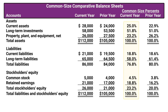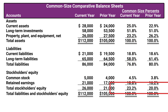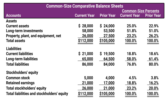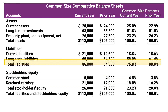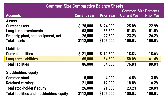For example, for the current year, total liabilities account for 76.8% of its financing, while stockholders' equity accounts for just 23.2%. We also see a slight increase in the percentages financed from equity in the current year, from 20% to 23.2%. Much of this change in equity is due to an increase in retained earnings from 16.2% to 18.8%, which is due to the company's reinvestment of net income. Another notable change is the decrease in long-term liabilities from 61.4% to 58%.